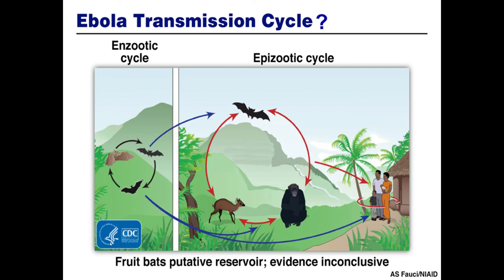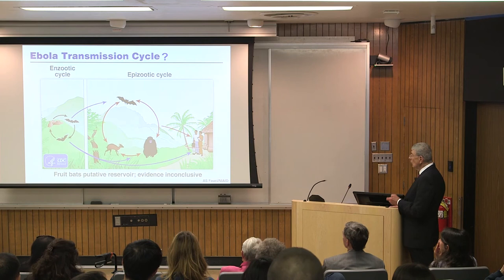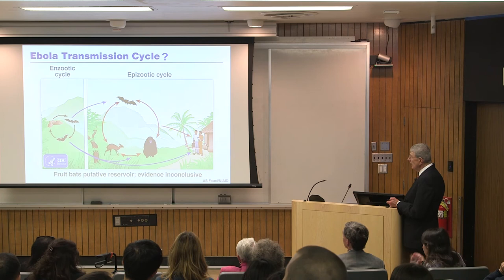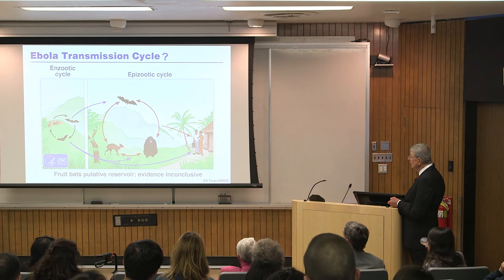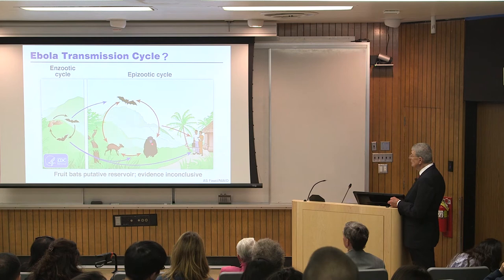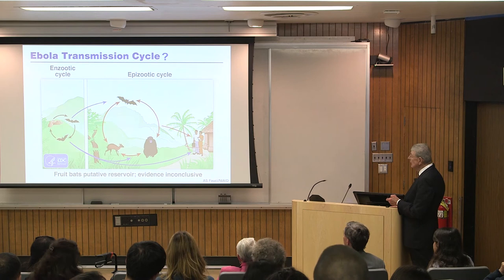Regarding where this virus resides — the natural reservoir — one hypothesis is that bats carry it. But we're still not sure if the bats that carry it are those directly responsible for contaminating humans. The histories and findings from the ecologic studies do not fully bear this out, although antibodies and even some virus are claimed to have been found in a duiker. There have also been major outbreaks in great apes in Africa.